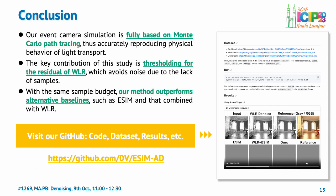Let's now wrap up the presentation. In this research, we propose an event-based camera simulation system that is fully based on Monte Carlo path tracing. Unlike the conventional techniques of thresholding brightness changes, our method operates by thresholding the residuals of a weighted linear regression problem. Owing to this, our method has shown to perform both quantitatively and qualitatively better than combinations of prior techniques that can be seen as alternatives. For those further interested in the work, our GitHub page provides code, dataset, and additional results of our research. Thank you.